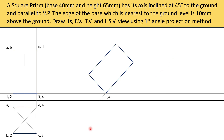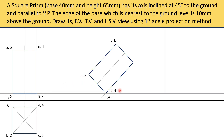Now we need to draw the top view and the side view. This is the axis — you have to join the axis, you can name it as well. Now we have to write A and B because we have just rotated the object 45 degrees. Only 45 degree rotation, so no point will be changed. A, B — this will be 1, 2 — this will be 3, 4 — and this will be C, D.